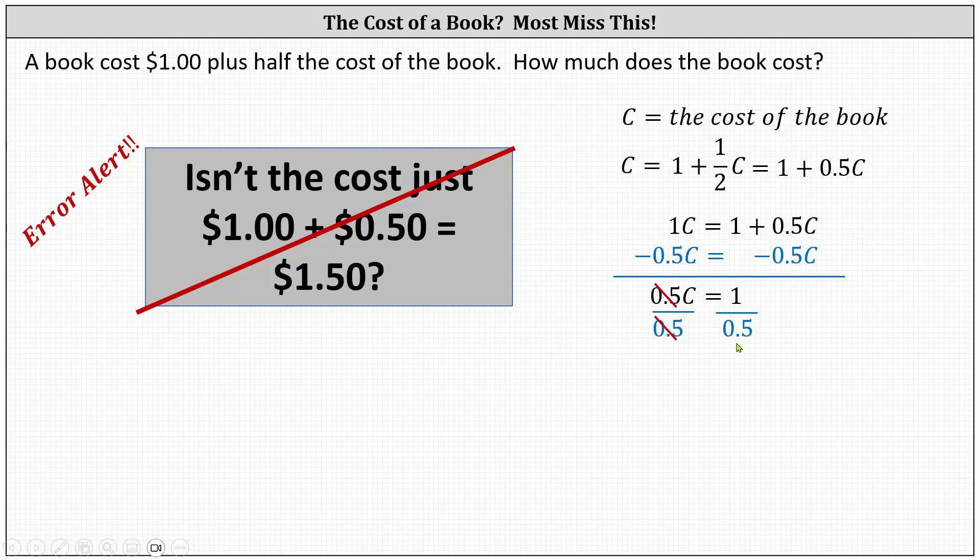Simplifying, we have C equals 1 divided by 0.5, which we can do on a calculator. Or it might be helpful to write 0.5 back as 1 half, giving us C equals 1 divided by 1 half. Recall dividing by a fraction is equivalent to multiplying by the reciprocal, meaning 1 divided by 1 half is equivalent to 1 times 2, which equals 2.